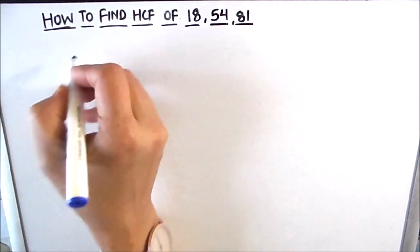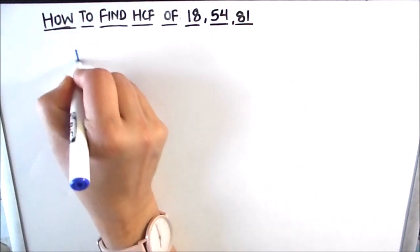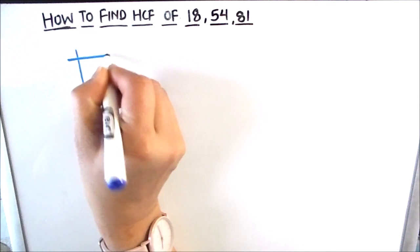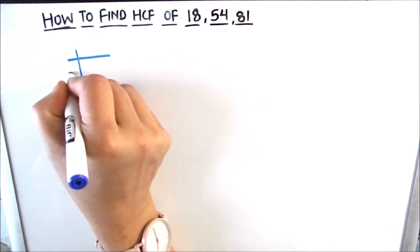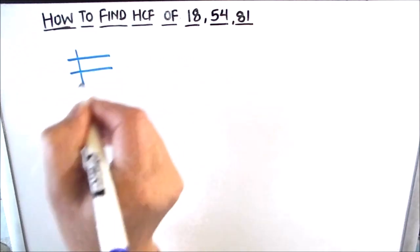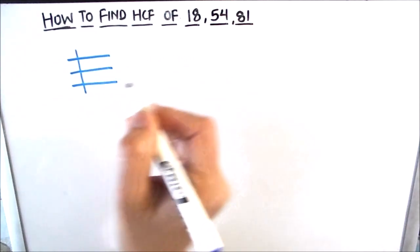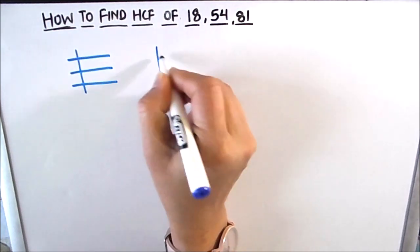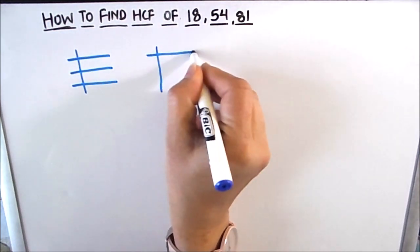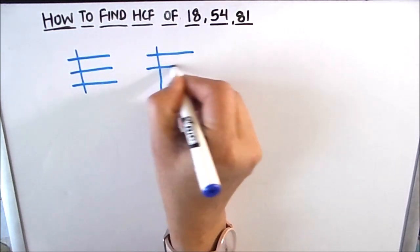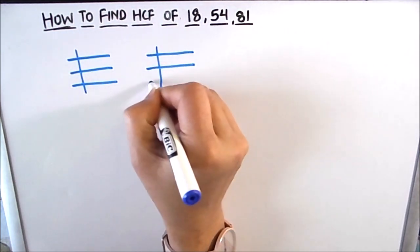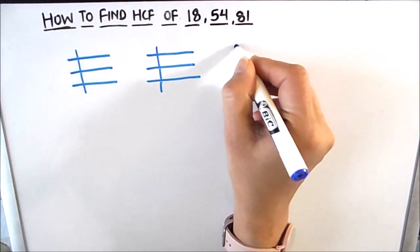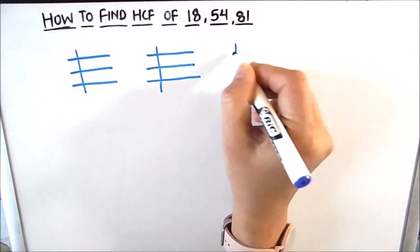For finding the HCF using the prime factorization method, we divide all three numbers separately and find the factors of each number. After finding the factors, we take the product of the common factors to find the HCF.